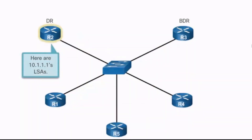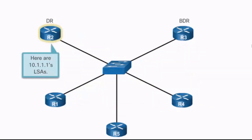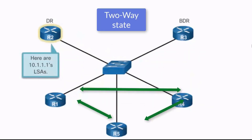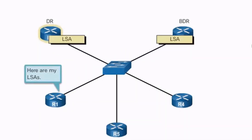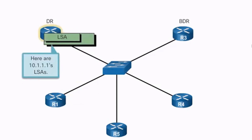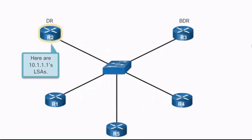By electing a DR and BDR in a multi-access network, routers R1, R4, and R5 maintain a Full state only with the DR and BDR, and only a Two-Way state with each other. When R1 has a change, it notifies only the DR and BDR. The DR then notifies all routers it has a Full state with — which is everybody. Routers 4 and 5 don't notify each other directly, since they only share a Two-Way state, significantly reducing flooding overhead.